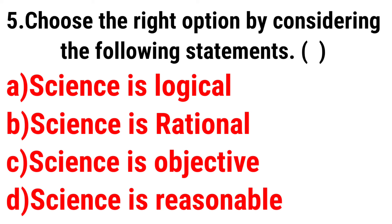Choose the right option: Science is logical, rational, objective, reasonable. Which of these is a characteristic? All of them are characteristics of science. So the answer is: all are correct — options A, B, and C are all right.